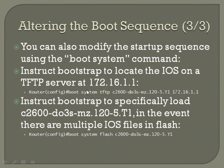That's one particular modification. If you wanted to instruct bootstrap to specifically load a particular IOS in the event there are multiple IOS files in Flash — first of all, that's only going to pertain to newer routers that have enough room in Flash to store two IOS images. A lot of older routers won't have enough memory in Flash to store two IOS images, so you might have to delete one before putting a new one on. But if you did have two and wanted to specify which one to load, you could use the boot system command: 'boot system flash,' then the name of the IOS file you want to load.